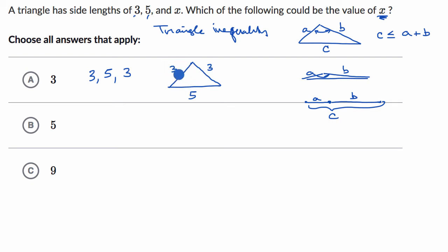But it also meets the conditions for the triangle inequality. Our longest side, this side right over here, the five, is less than or equal to the sum of the other two sides. Three plus three is six. Five is for sure less than or equal to six. So I like this choice.